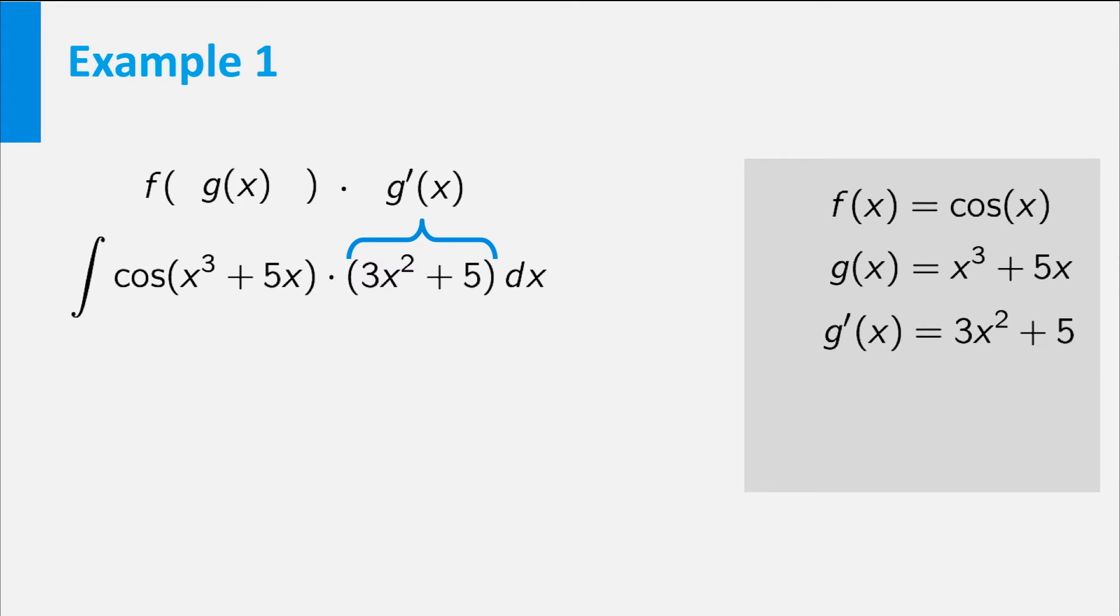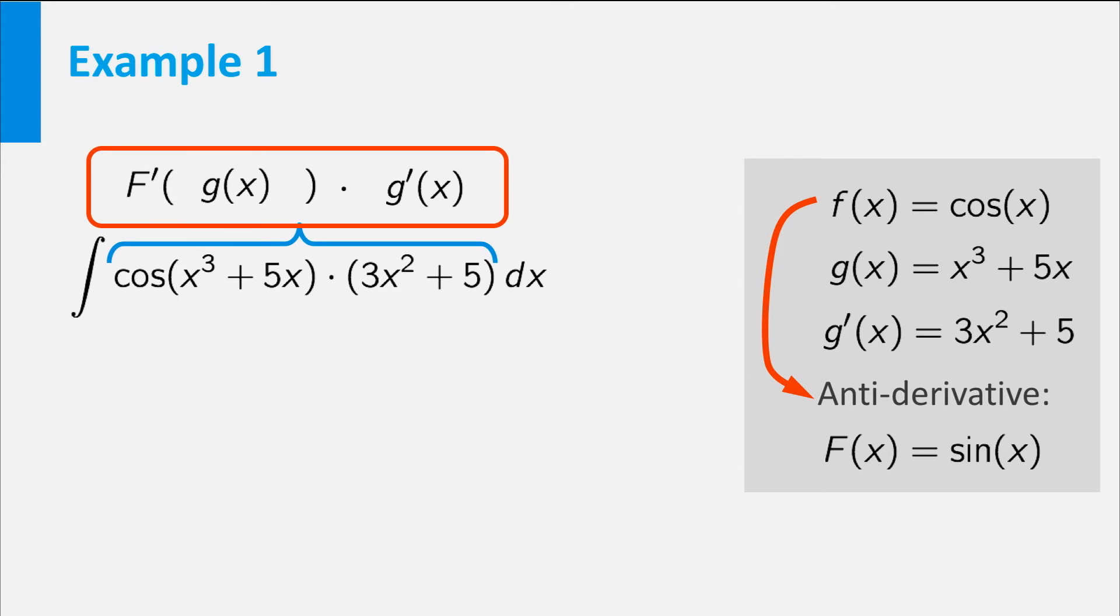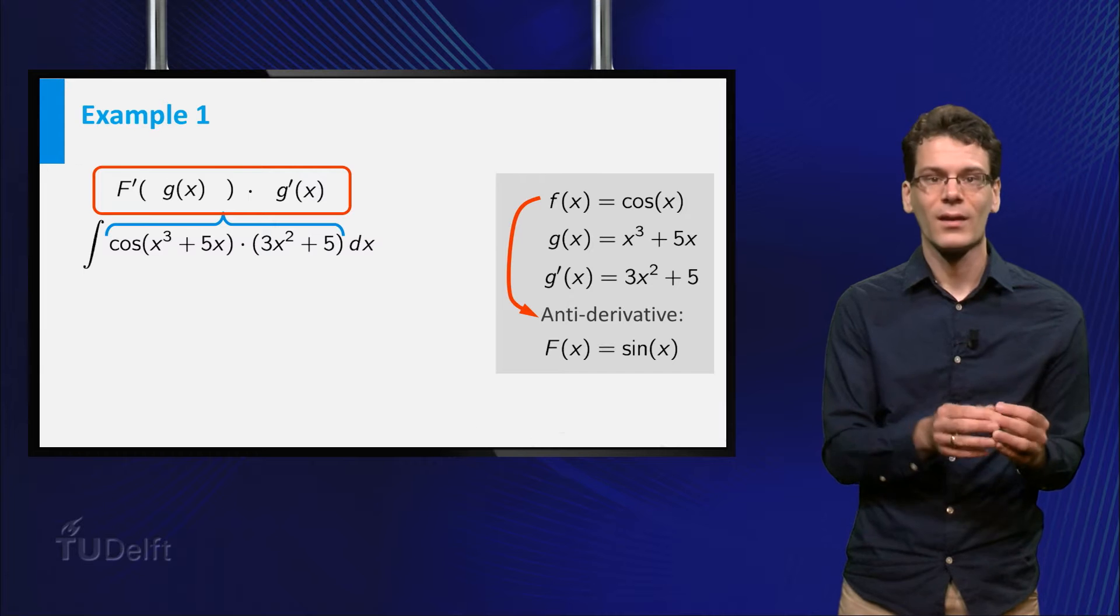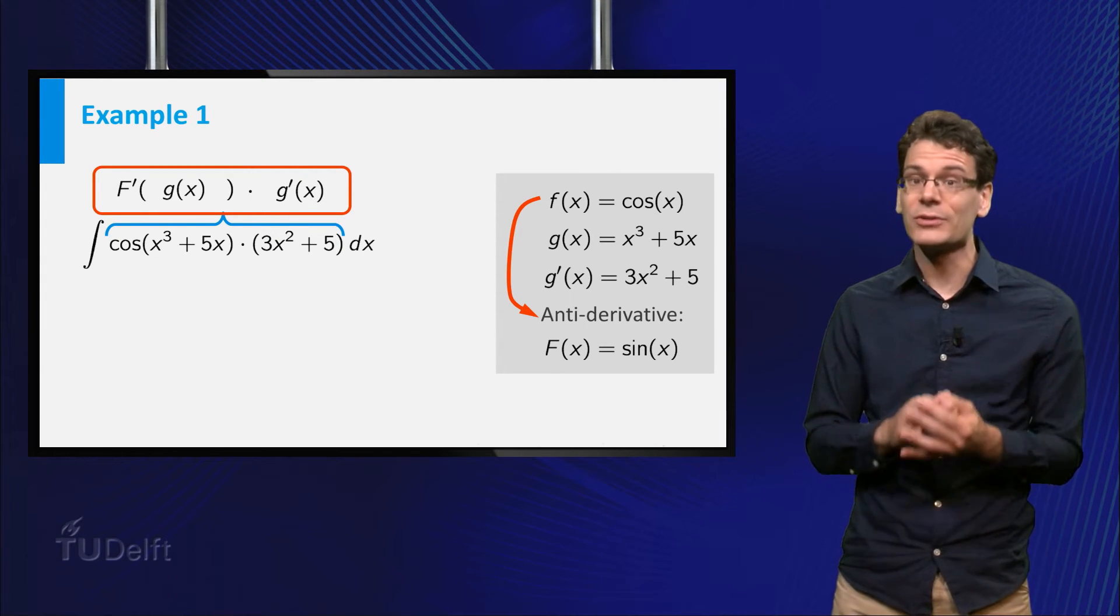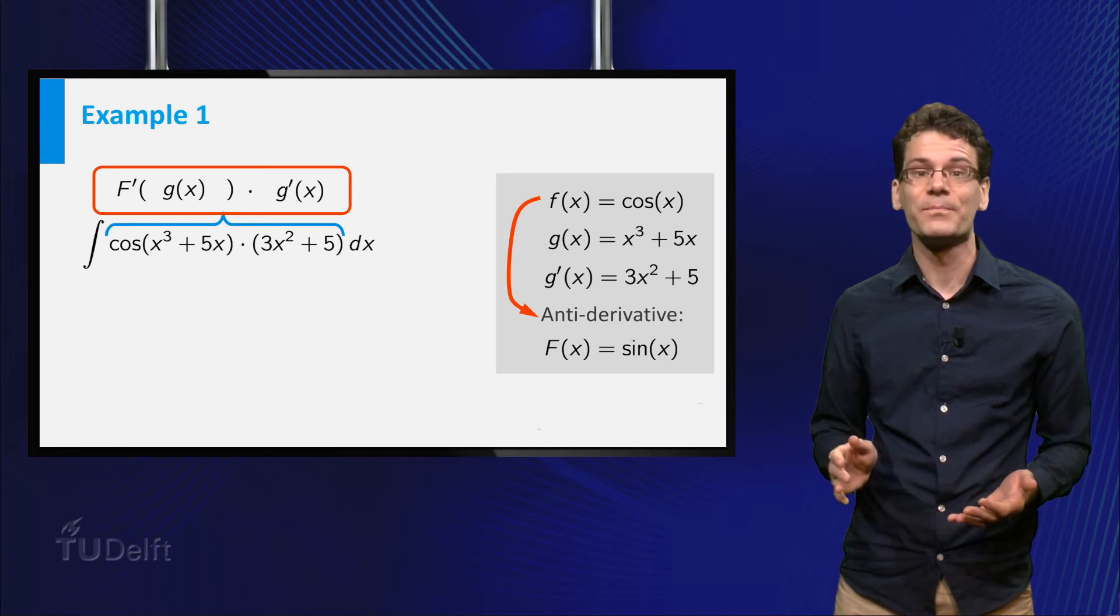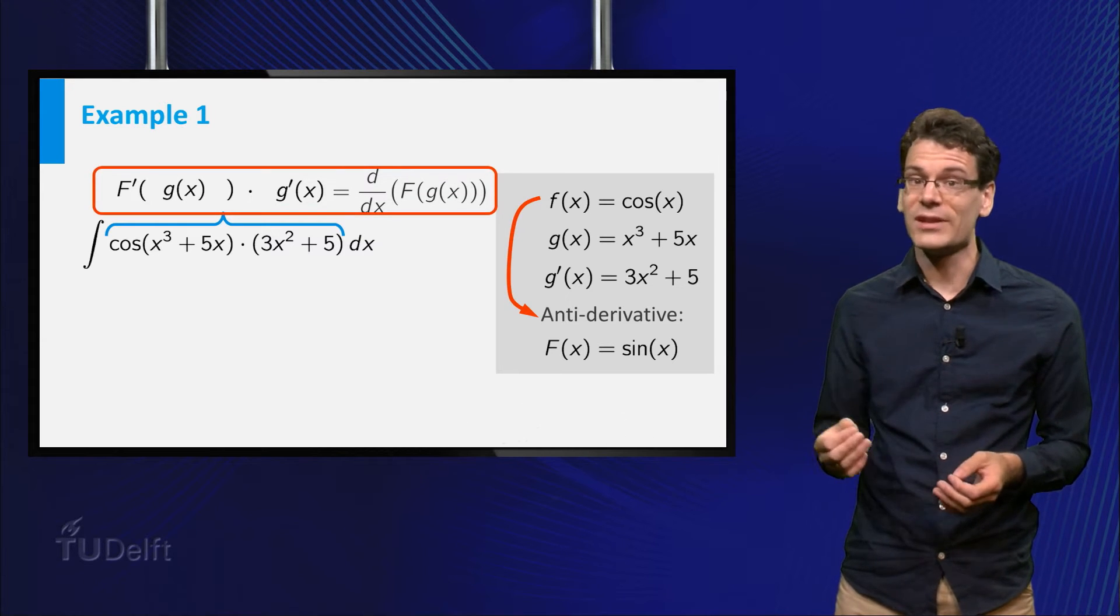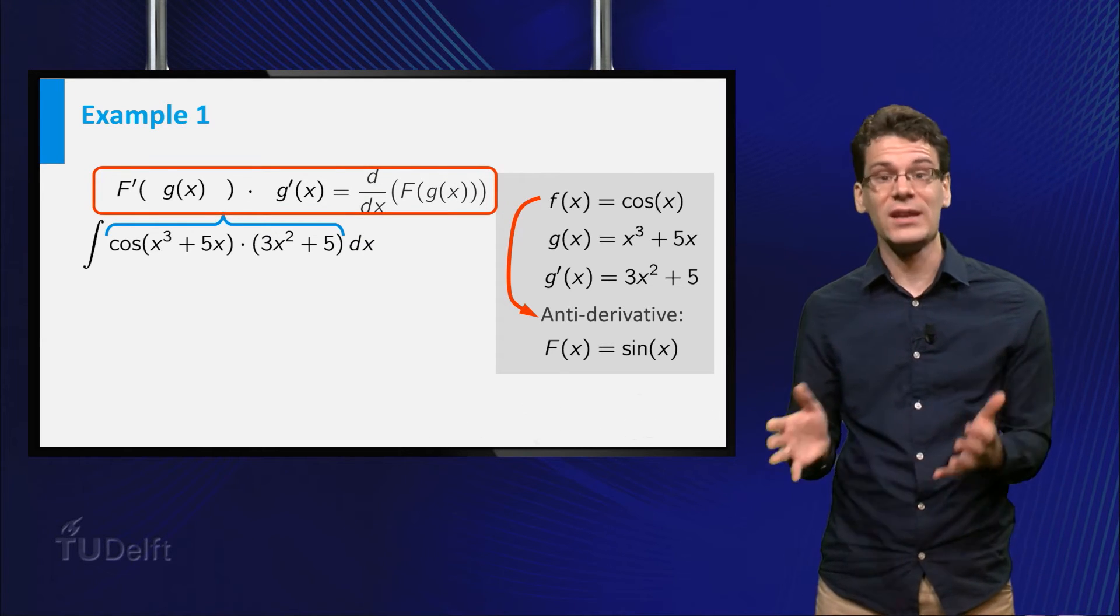Now we know an antiderivative of the cosine. It is the sine. Let's denote it by capital F. Then we see that the function that we try to integrate is of the following form: capital F prime of g(x) times g prime of x. Do you recognize this expression? It is precisely the result of the chain rule for differentiation. It is equal to the derivative of capital F of g of x.